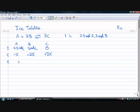So in equilibrium, we just add the initial and the changes. So it'll be 2.5 minus X for A, 3 minus 2X for B, and just 3X for C.